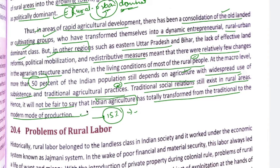According to Gail Omvedt, in states with capitalistic mode of production, the rural-urban dominant class emerged and benefited. But overall, contribution to GDP is still low, population dependence is high, and most states are those where the impact was not much — they are still running in a semi-feudal structure setup. So here we stop our lecture.